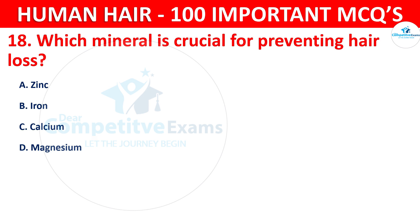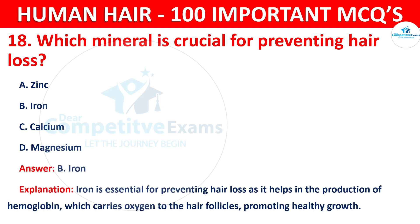The correct answer is B — iron. Iron is essential for preventing hair loss as it helps in the production of hemoglobin, which carries oxygen to the hair follicles, promoting healthy hair growth.